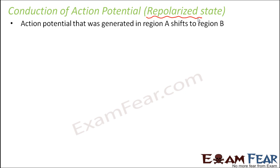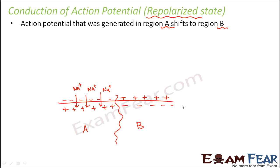The action potential which was generated in region A now shifts to region B. In region A, due to a rapid influx of sodium ions, the inner surface becomes positively charged and the outer surface becomes negatively charged. But for the neighboring region B, the charges are the same as in the resting phase — outer surface positively charged and inner surface negatively charged.